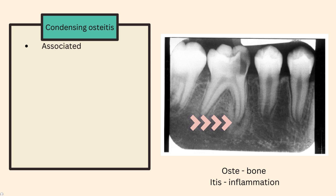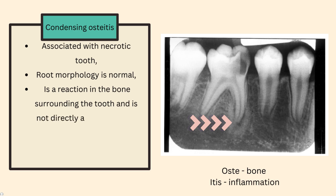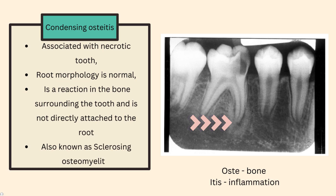Number one: condensing osteitis. It is associated with a necrotic tooth. As you can see in the picture, the cavities are deep enough that they are reaching the pulp. And when we did the cold test, it revealed no response, which means that the pulp is dead. So it is associated with a necrotic tooth — or in other words, a carious tooth, not a sound tooth.